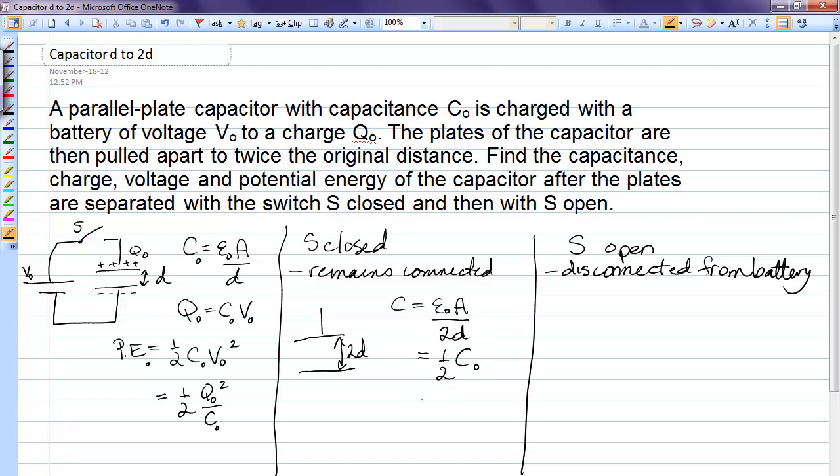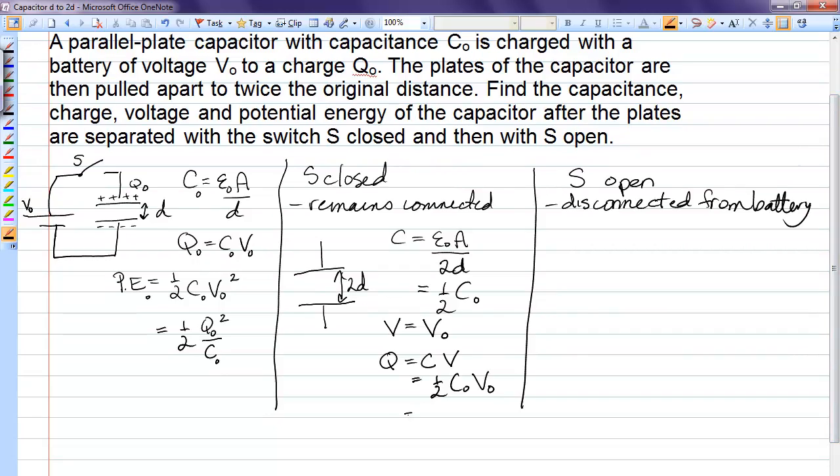Now, the fact that it remains connected to the battery means that the voltage across the capacitor stays the same. So, the new voltage is the same as the original voltage. That means that the charge has changed. So, Q, which is new capacitance times the new voltage, becomes half the original capacitance times the original voltage, which becomes half the original charge.